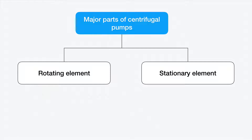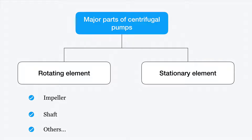If we strip a pump, we can separate the centrifugal pump into two main parts: the rotating element and the stationary element. The rotating element is the impeller and the shaft and all the other components that rotate with the train. The stationary element is the casing and bearing housing and others.